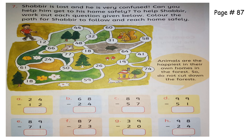Now come to page 87. What is the question? Shabir is lost and you have to help him get home safely. To help him, solve the questions on this page and find the answers in the picture. First question: 4 minus 2 is 2, and 2 minus 1 is 1 — so the answer is 12. Where is 12 in the picture? Here — so Shabir will come here.